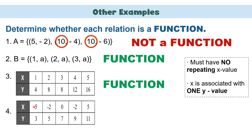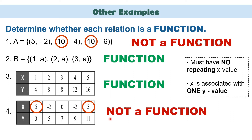Another example: values of x are 5, −2, 0, −2, 5, and for y-values we have 3, 5, 7, 9, 11. Observe, and as you can see, we have repeating x-values here. We have two 5s as well as two negative 2s. Therefore, this set is not considered as a function.